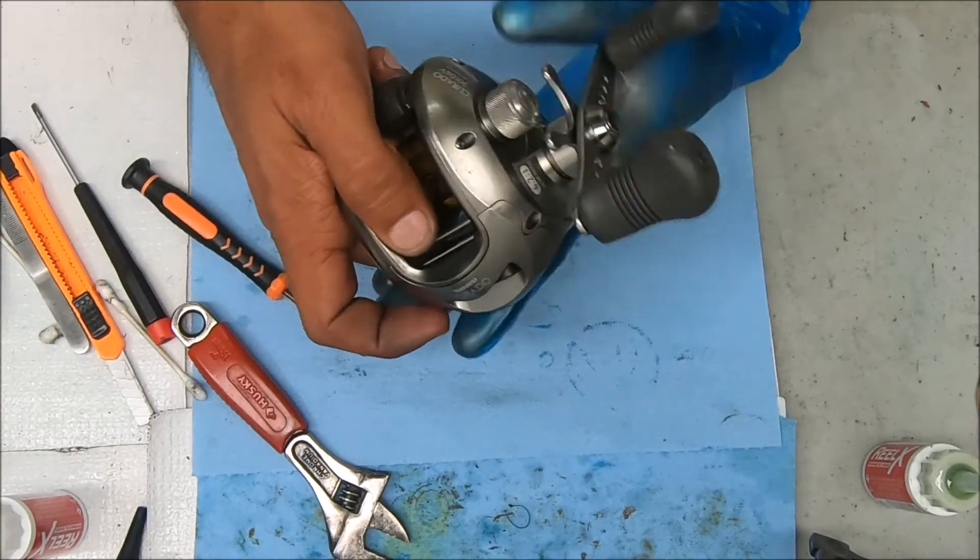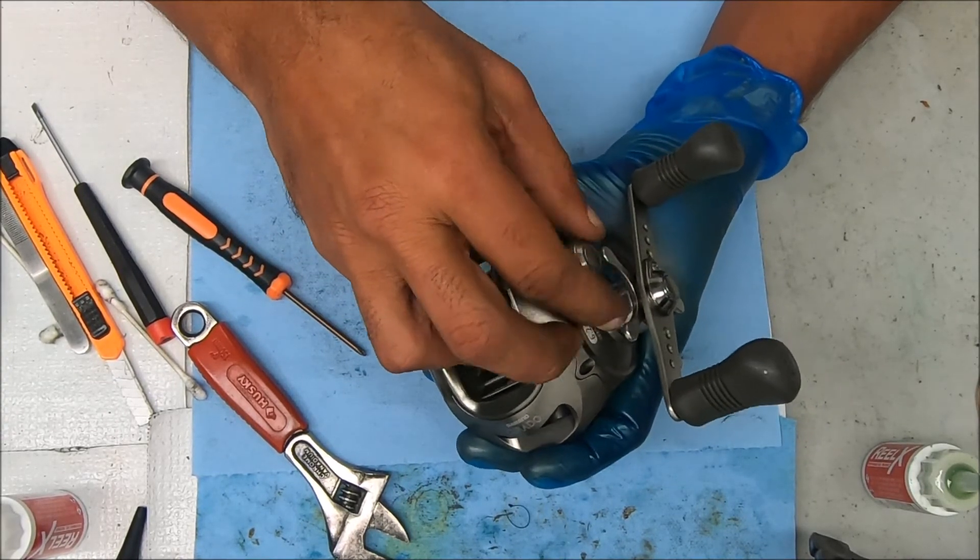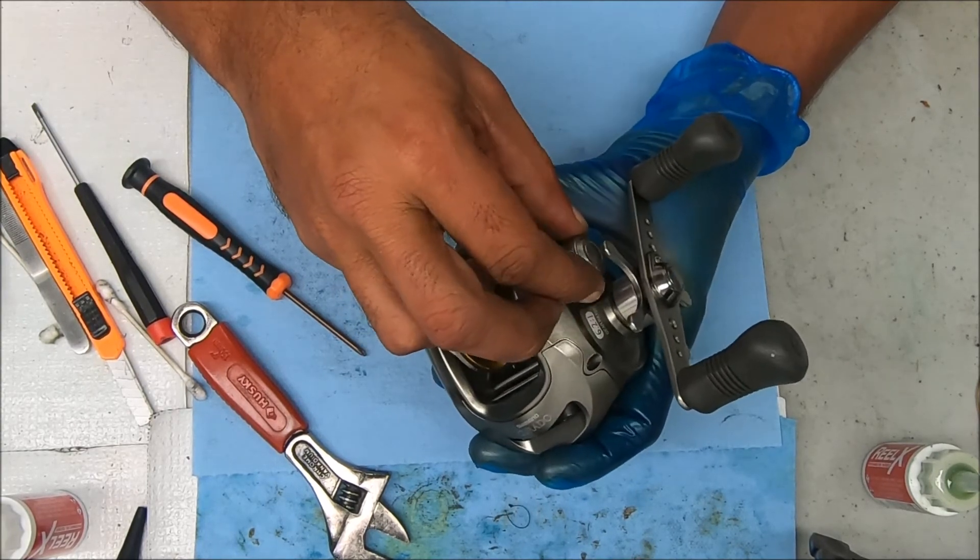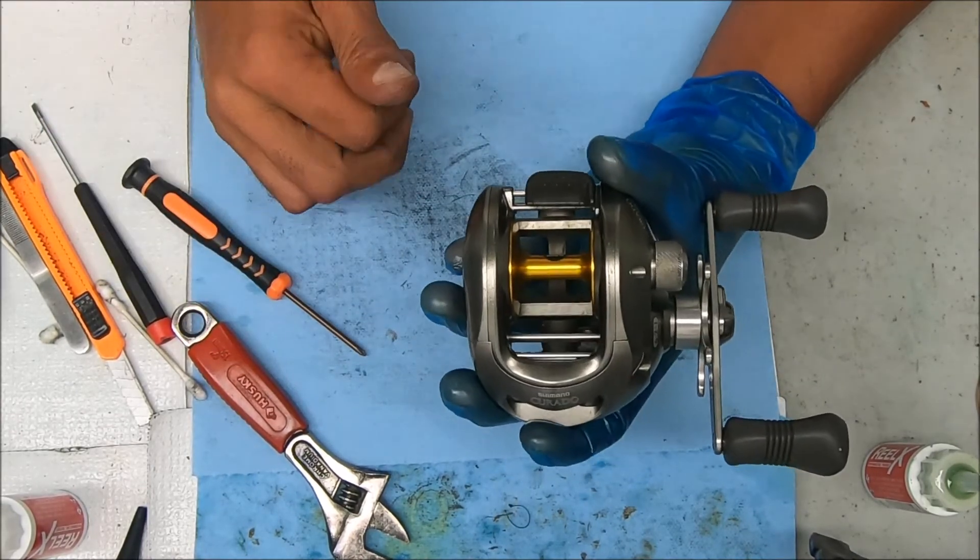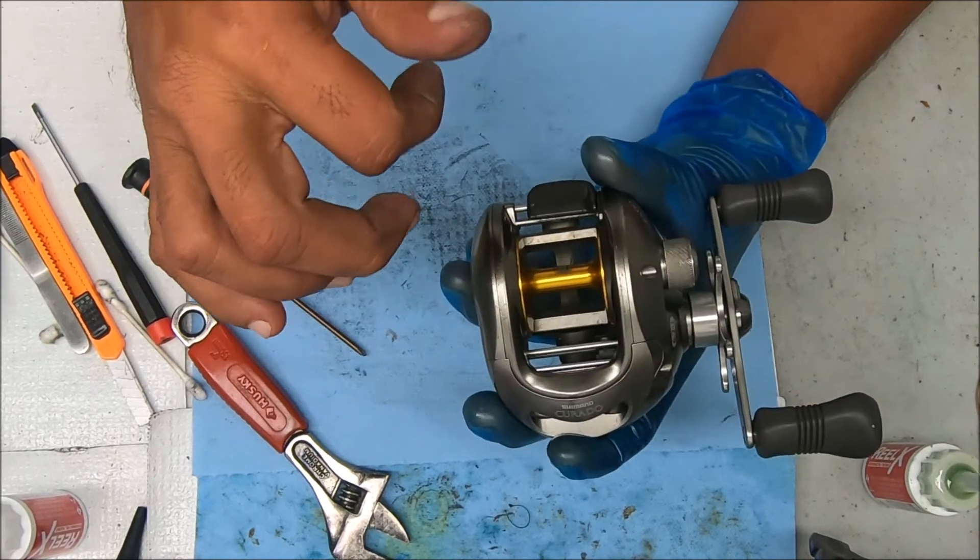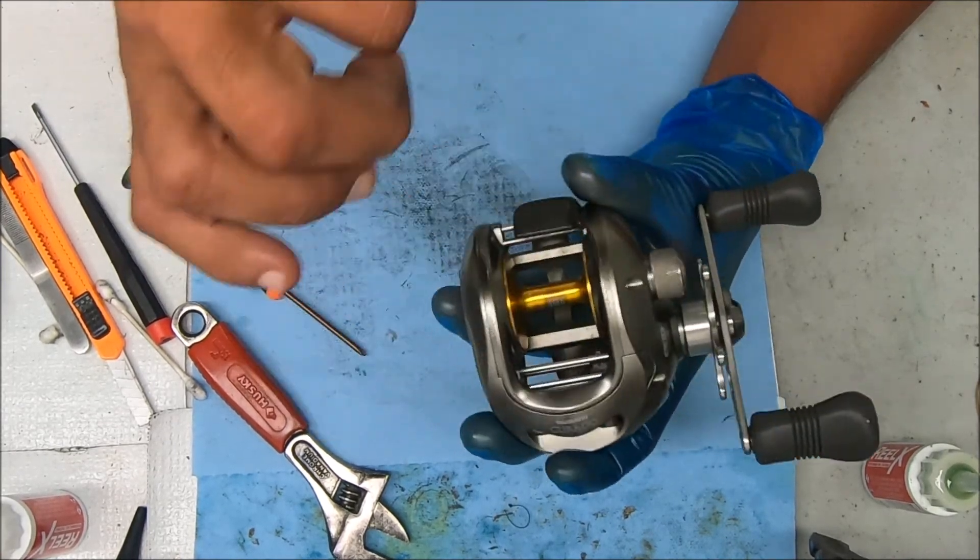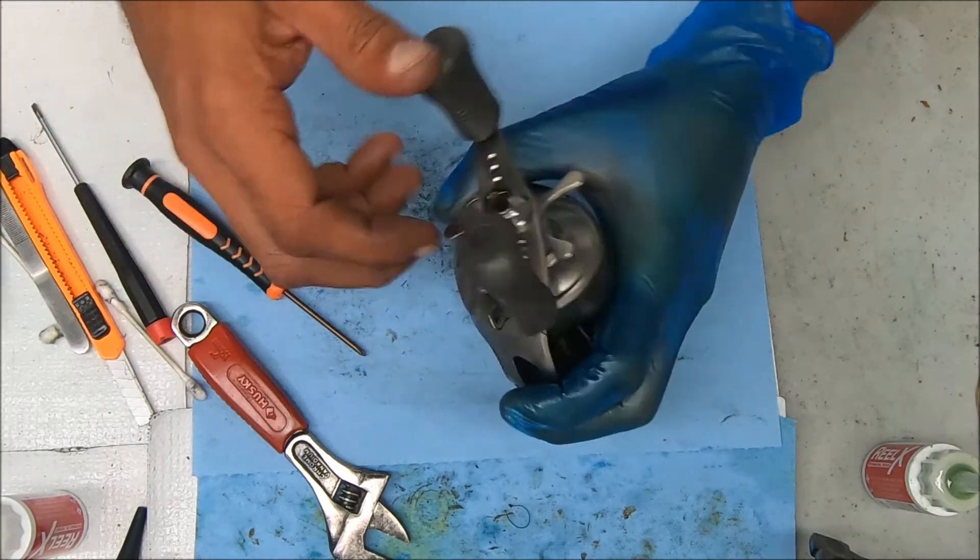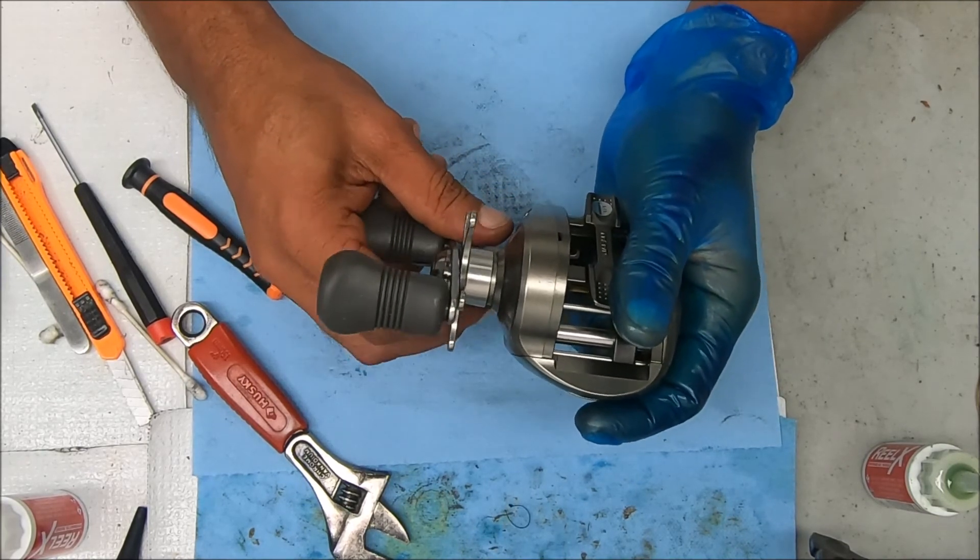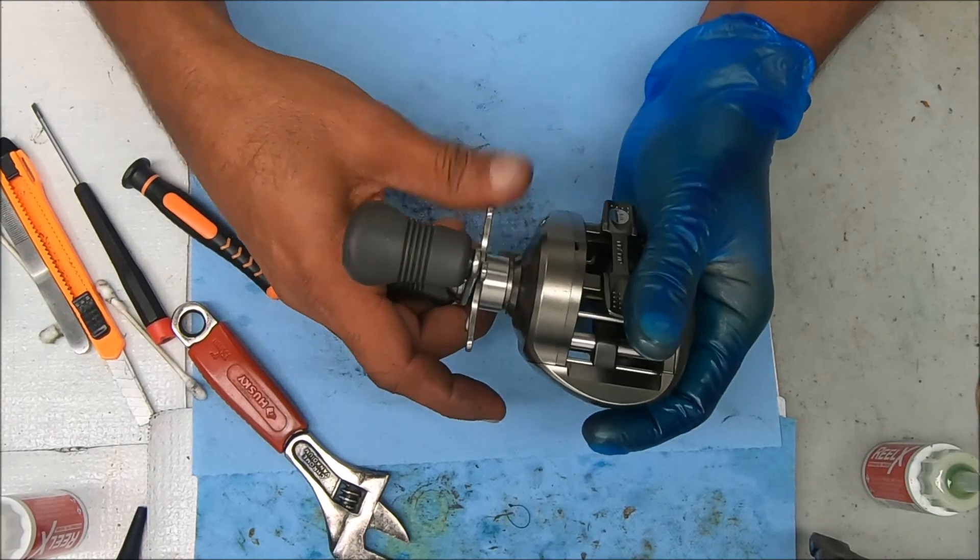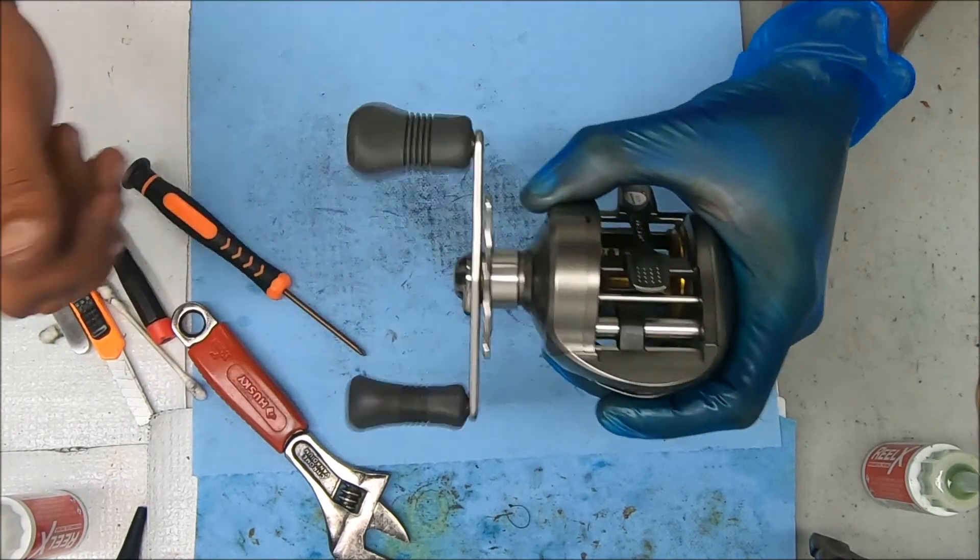All right so let's make sure we have this put together properly. Just going to double check the free spool. Looks good. The clutch works. Anti-reverse works. Drag. Drag works nicely also. All right guys, thanks for watching. I'll see y'all next time.